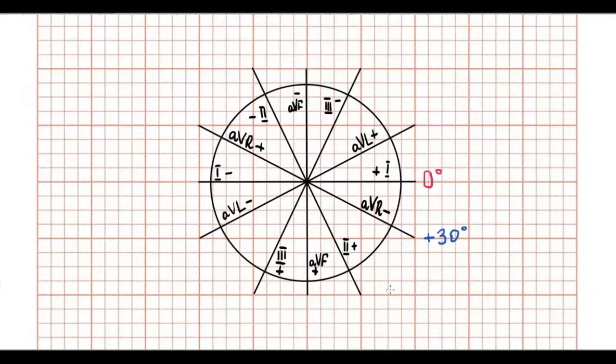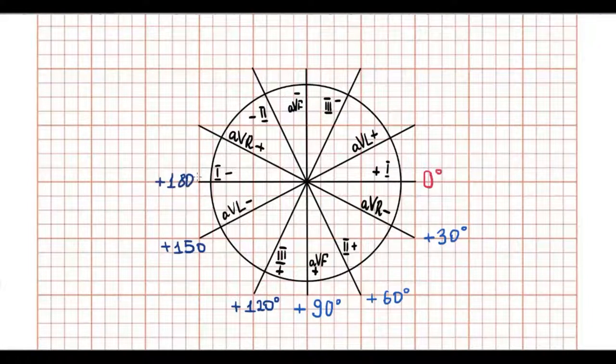All points below lead one are positive, and all points above the first lead are negative.